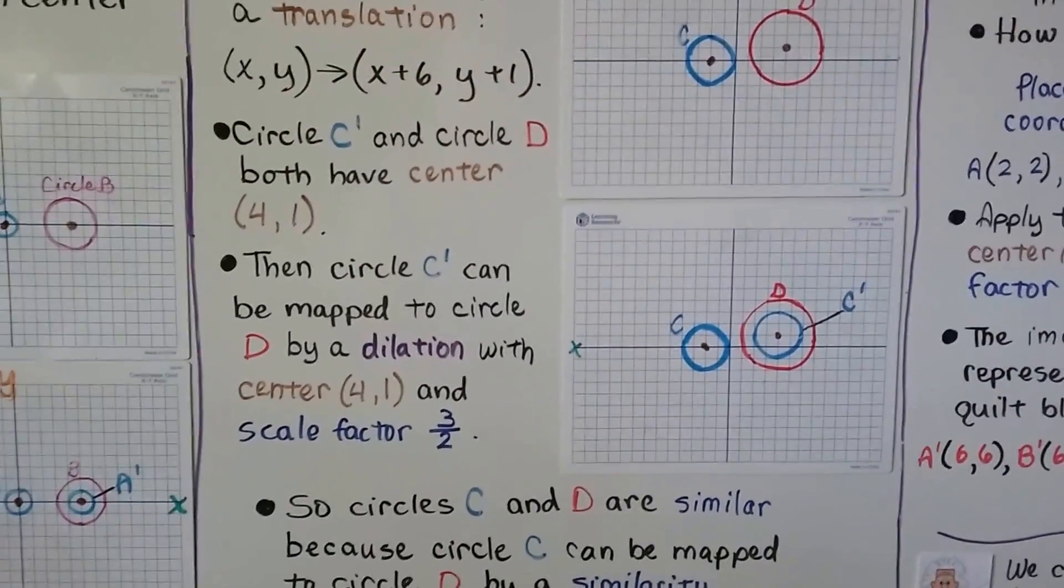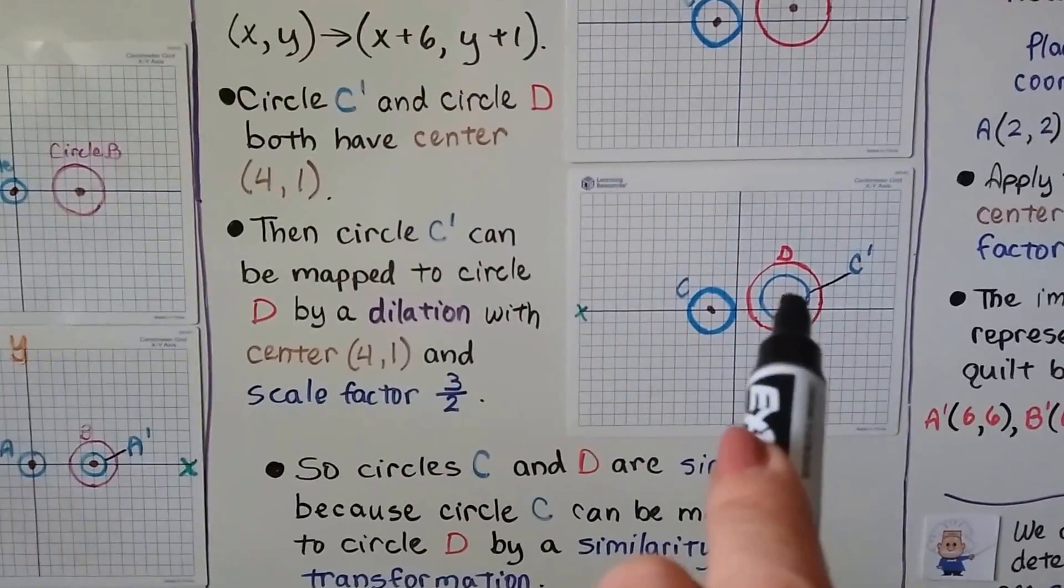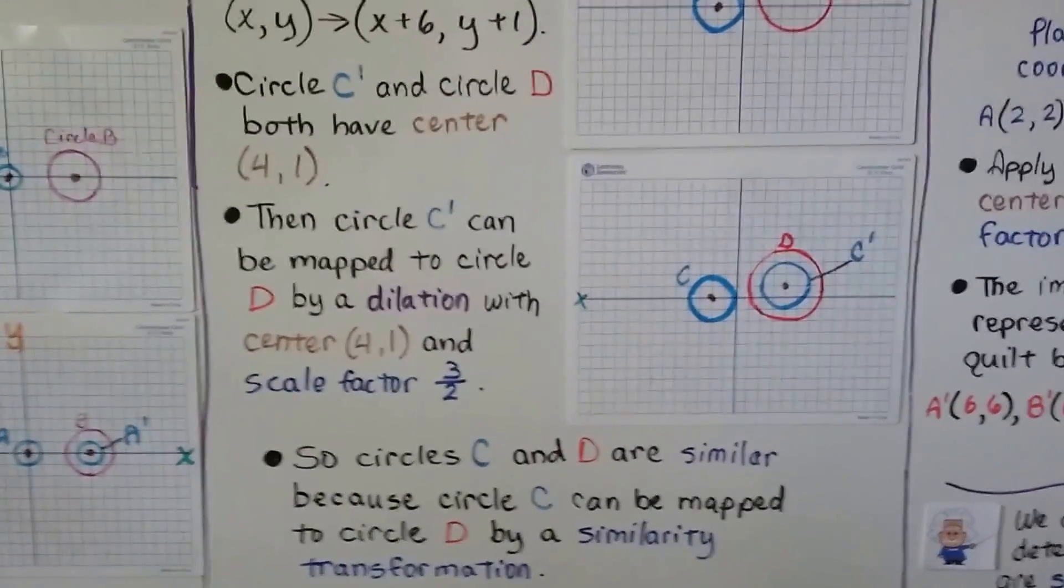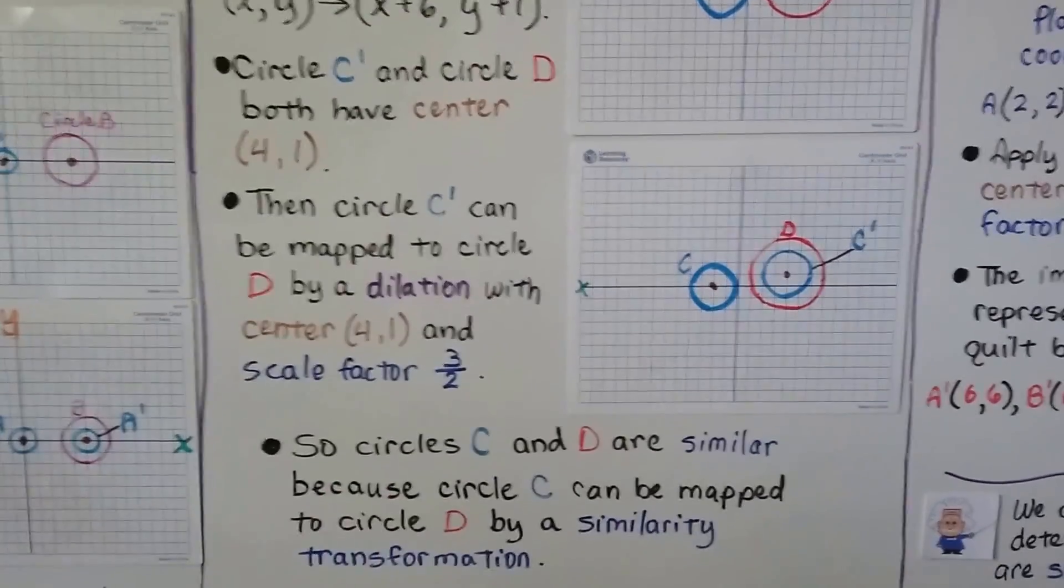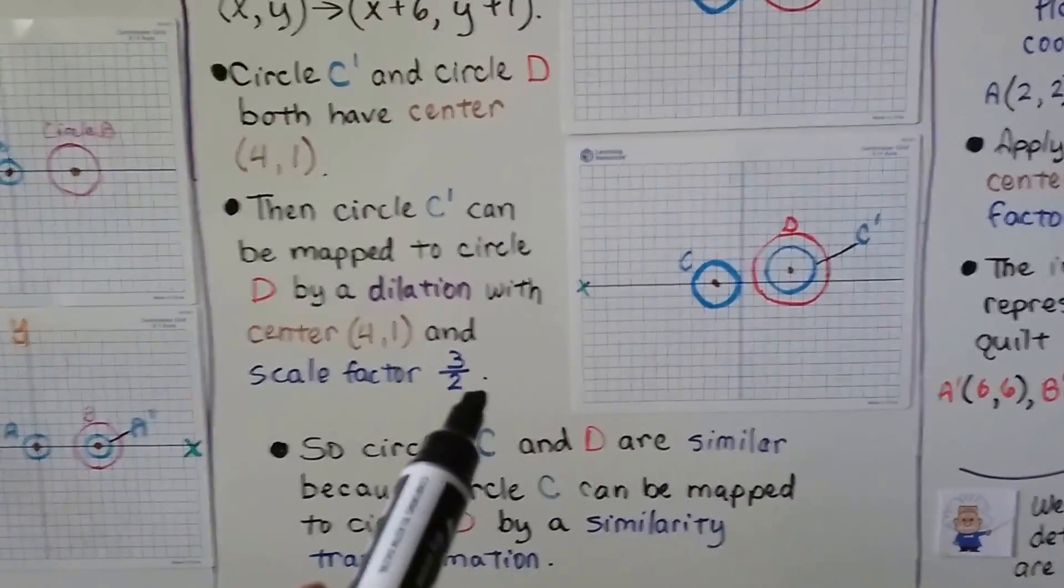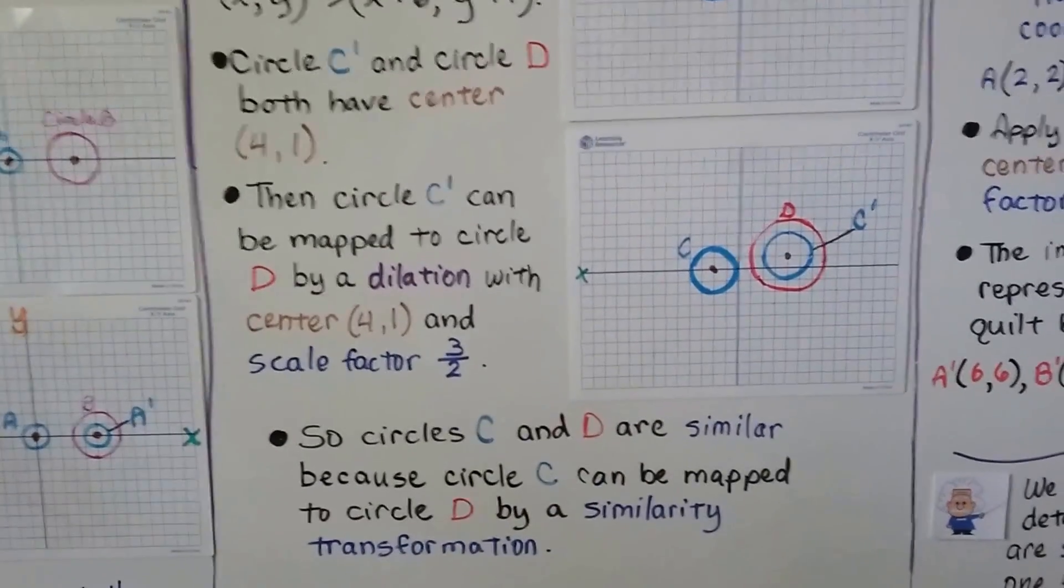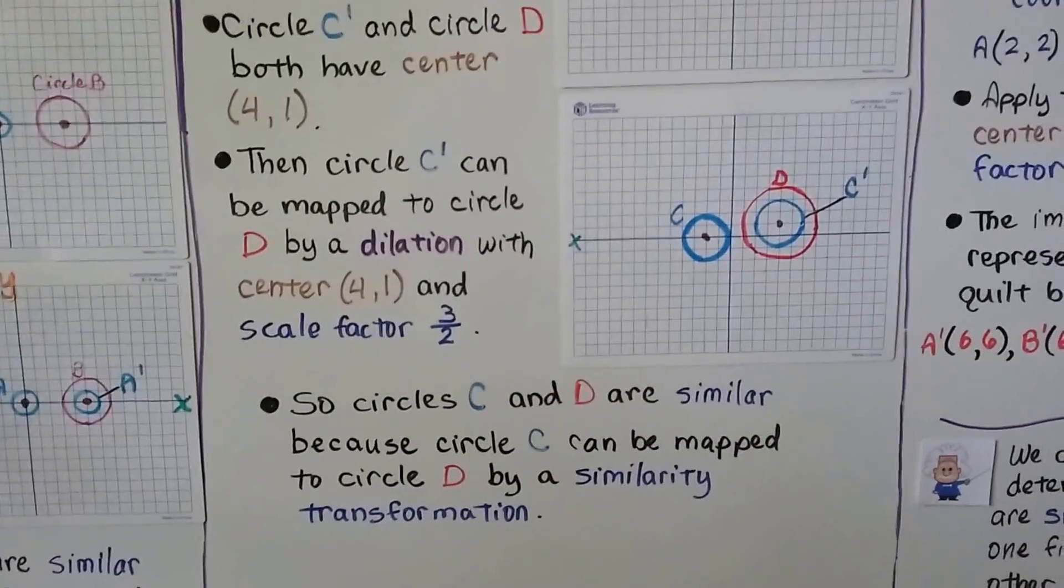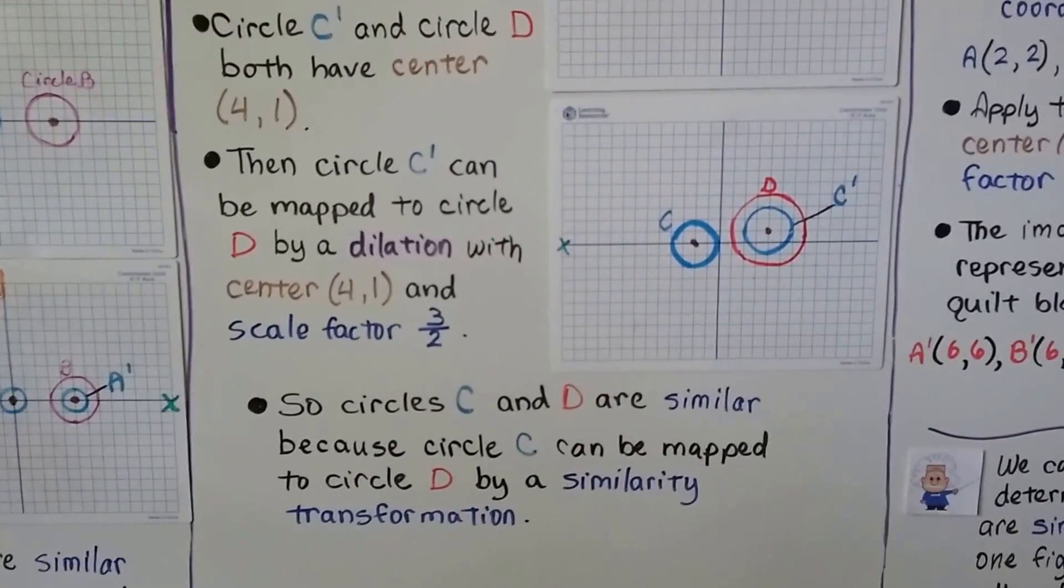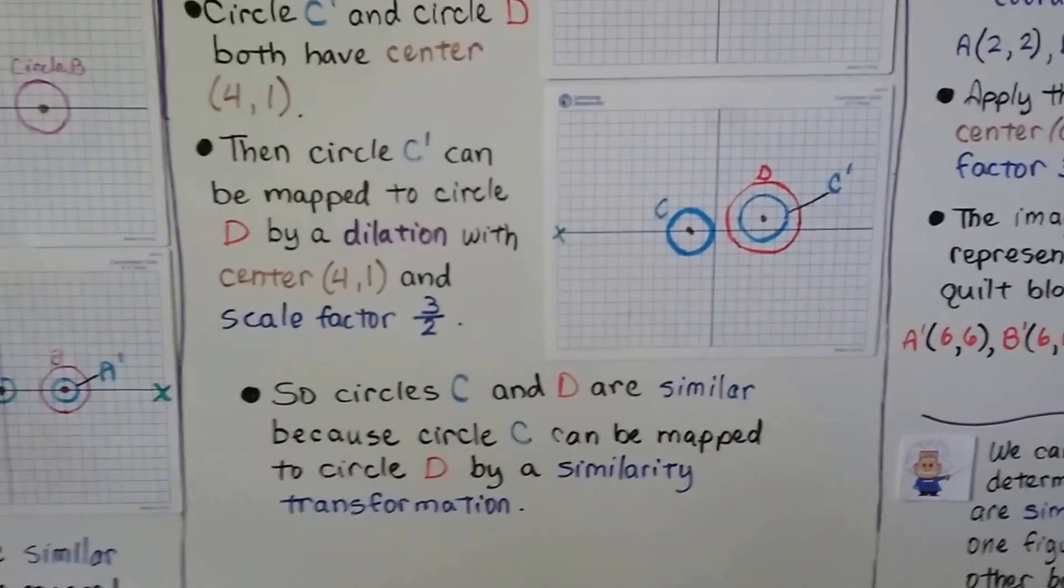Circle c prime can be mapped to circle d by a dilation with center four one and a scale factor of three halves, which is one and a half. So you'd multiply the x and y values by one and a half once it was moved over to here to make it the same as d. So circle c and d are similar because circle c can be mapped to circle d by a similarity transformation.